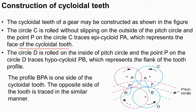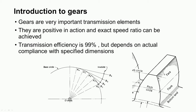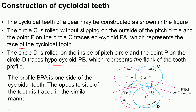Circle D, the second circle, rolls inside the fixed pitch circle. The point P on circle D traces hypocycloid PB, which represents the flank of the tooth profile. From this diagram we can understand what is the face and what is the flank of the tooth. The profile BPA is one side of the cycloidal tooth, and the opposite side B′P′A′ is traced in a similar manner.